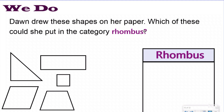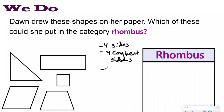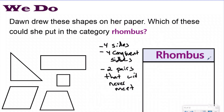Let's do one more problem — another way they might ask these questions. Dawn drew shapes on her paper. Which could she put in the category rhombus? To be categorized as a rhombus, a shape must be a quadrilateral with four sides, have four congruent sides, and be a parallelogram — two pairs of opposite sides that will never meet. Those are the three attributes a shape must have to be a rhombus.